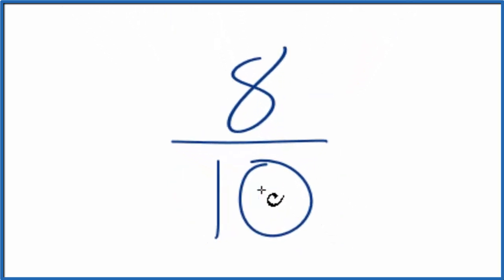So we have 8 over 10, and we want another fraction that's in lowest terms. It'll have the same value, just the numerator and denominator, they'll be in the lowest terms.